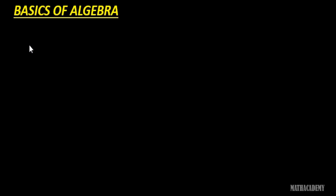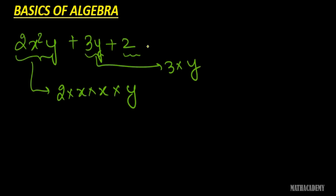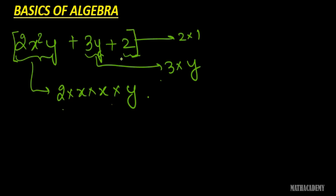These are some terminologies we need to know: constants, coefficients, and powers. One last thing about terms is that in an algebraic expression, the terms are separated by a positive or a negative sign. Each term can be written as the product of its factors — for example, 2x squared y can be written as 2 times x times x times y, and 3y as 3 times y. All these terms together form an algebraic expression. If there are negative powers of the variable or variables in the denominator, then that algebraic expression is not a polynomial.